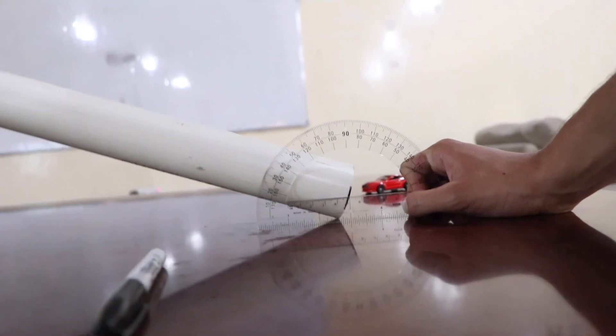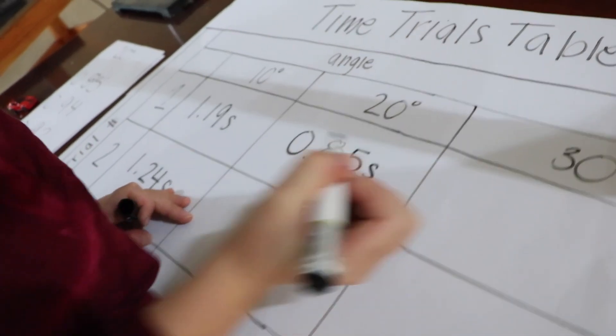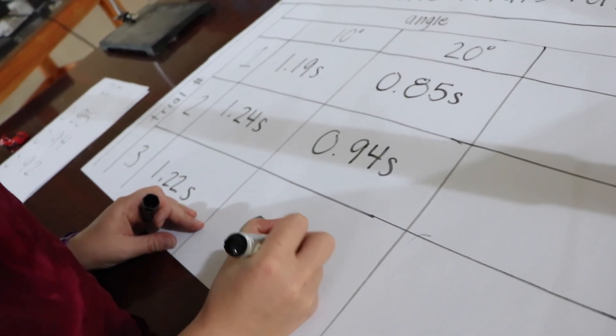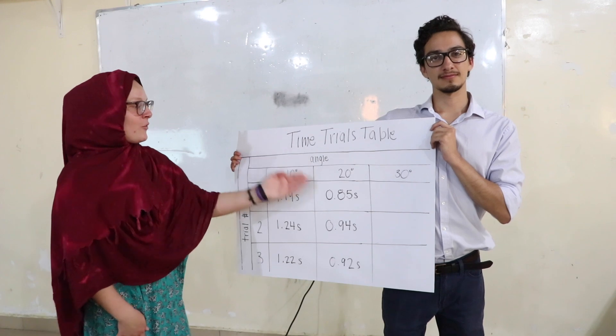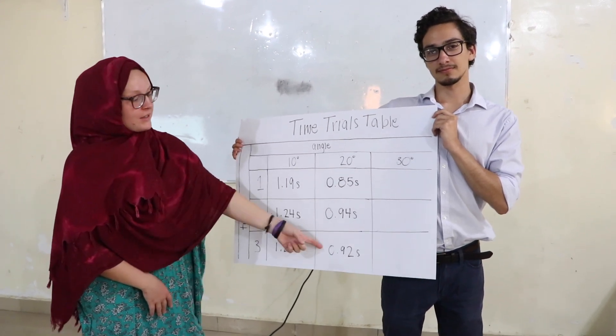Now we're going to change the angle to 20 degrees and complete three more trials. Trial one at 20 degrees: 0.85 seconds. Trial two at 20 degrees: 0.94 seconds. Trial three at 20 degrees: 0.92 seconds. Here's the data for our three trials at an angle of 20 degrees — the first trial we got 0.85 seconds, the second one 0.94 seconds, and the third one 0.92 seconds.